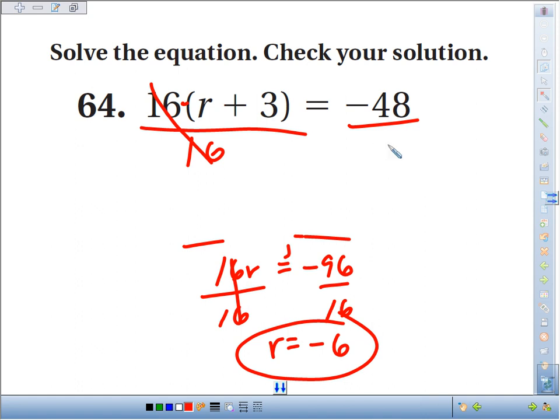And if you do that on both sides, you get r plus 3 equals negative 48 divided by 16. That's negative 3. One step, minus 3 on both sides, and you get r equals negative 3 minus 3 is negative 6.